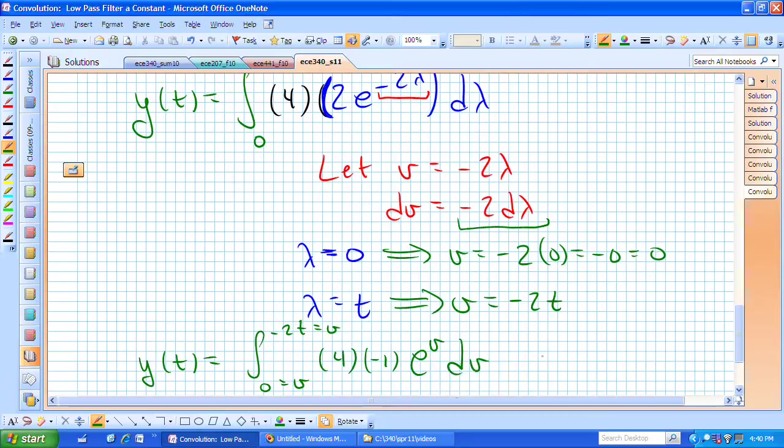I have a minus 2 d lambda, which is dv. So I now have minus 4 integral from v equals 0 to minus 2 t of e to the v dv.